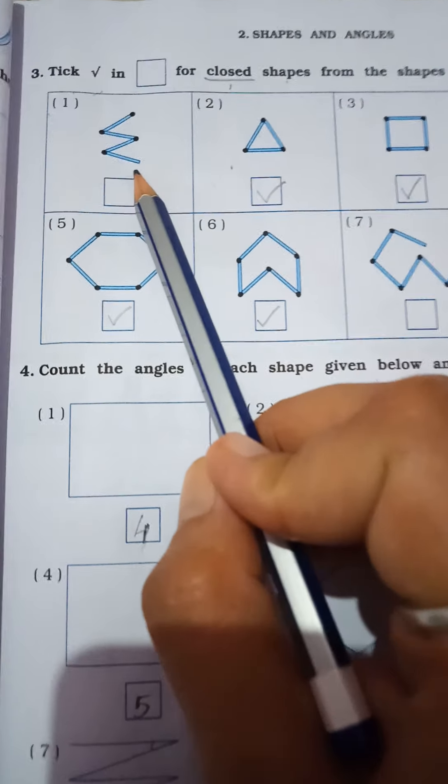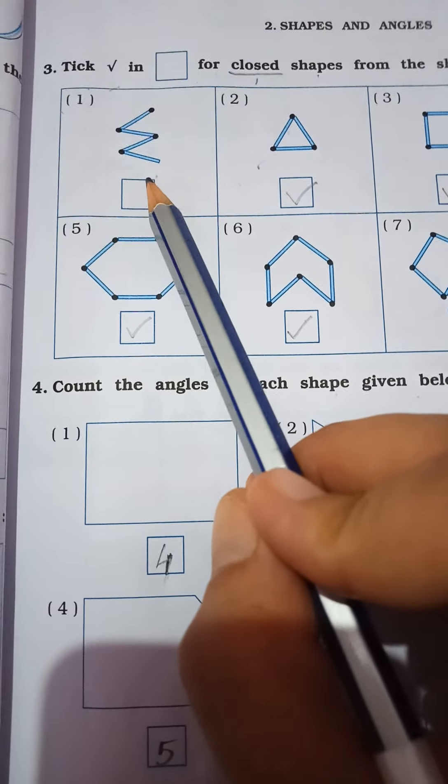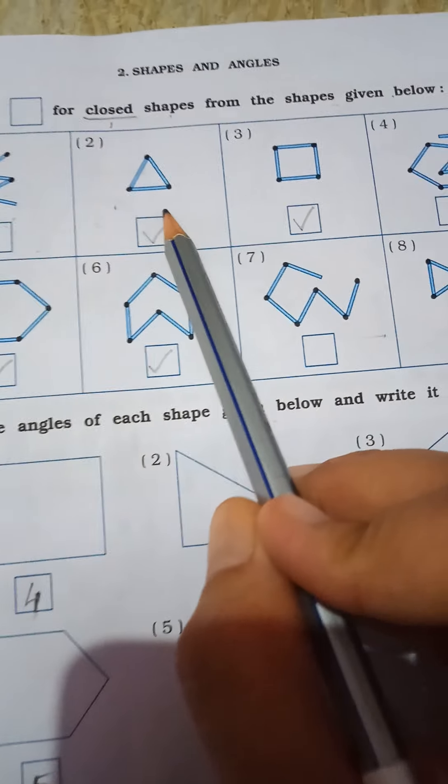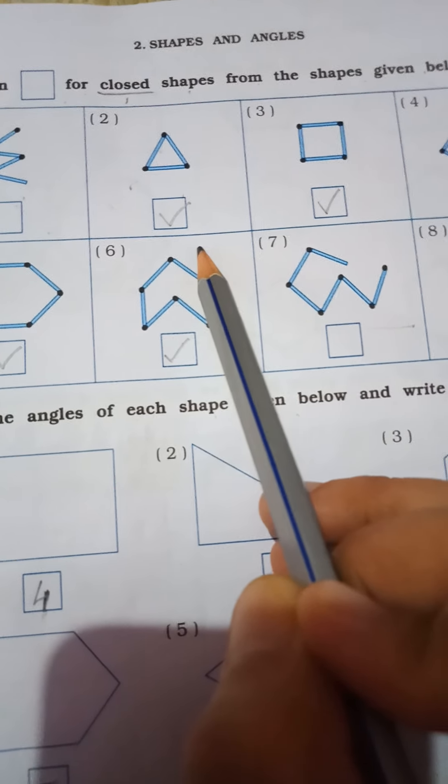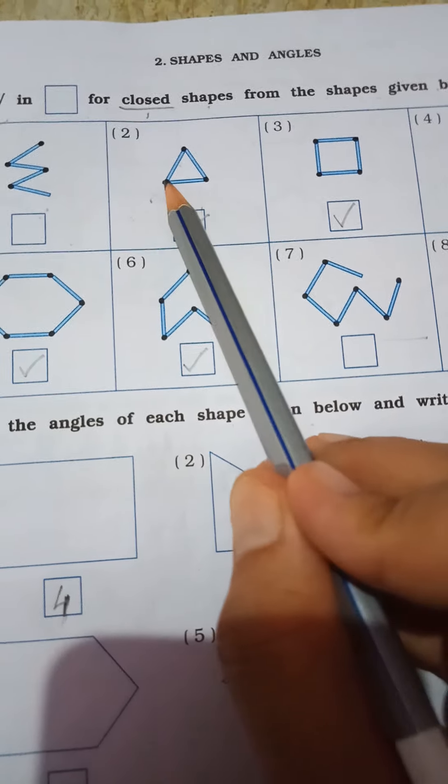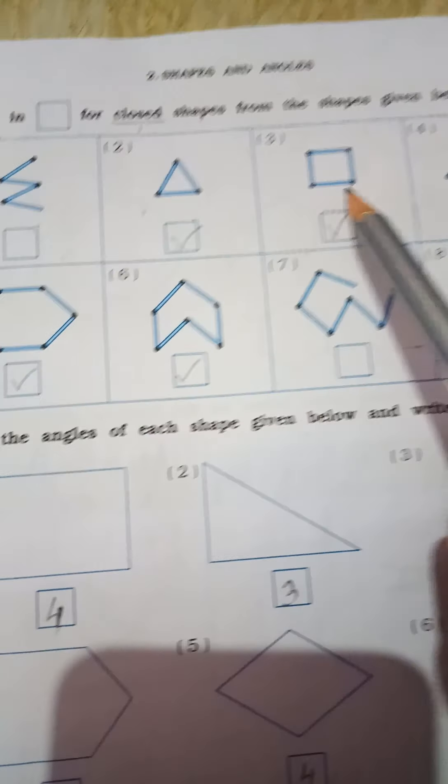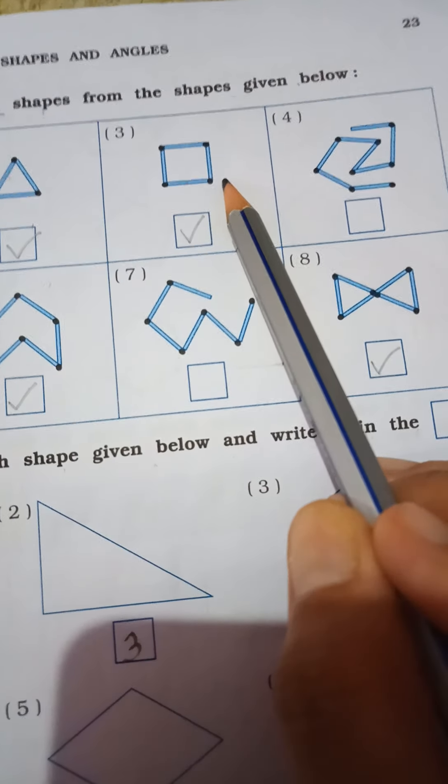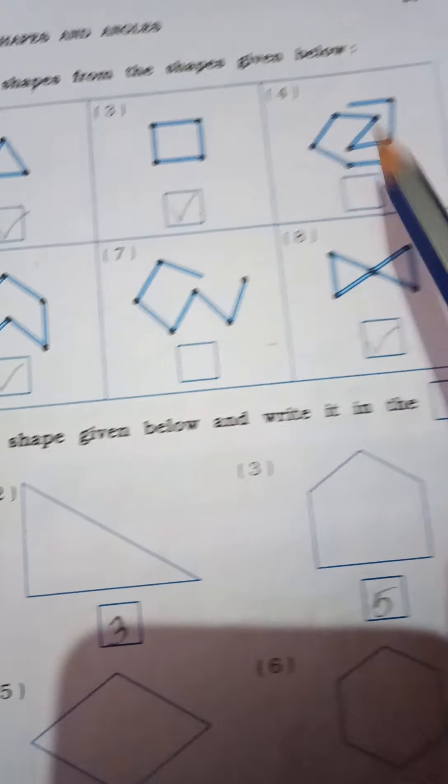Then you can see here the first one. This is the close shape? No, this is the open shape. See the second one. This is close shape. Bandh jagya chai ban chai na. So this is closed. Fourth one, fourth one also closed. So I am giving the tick.